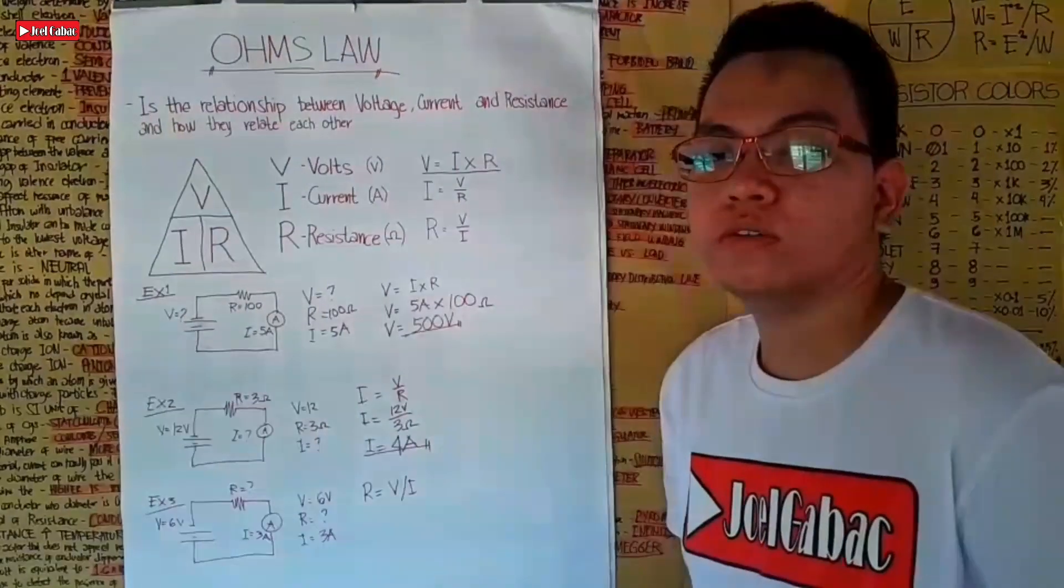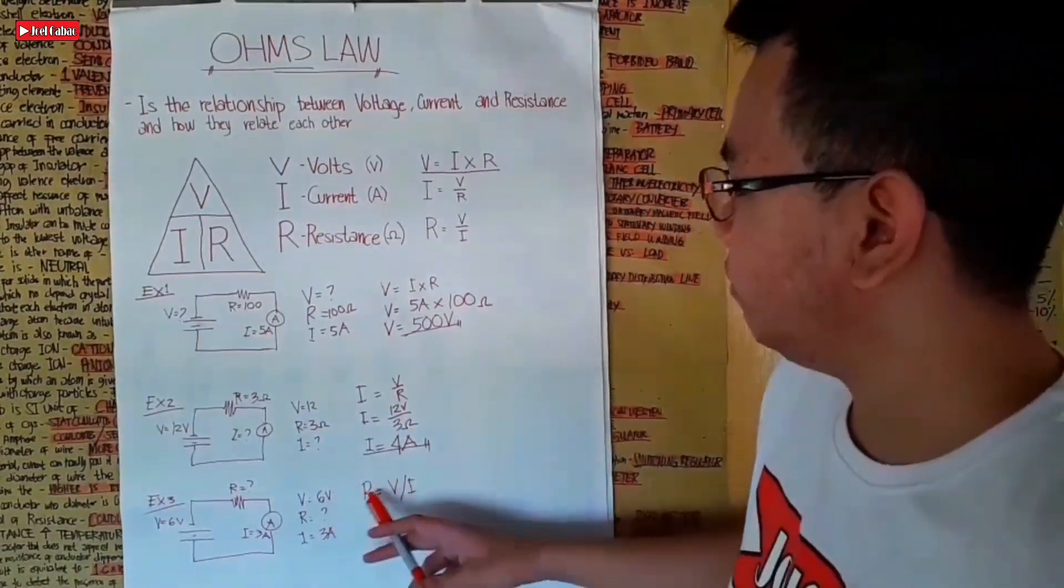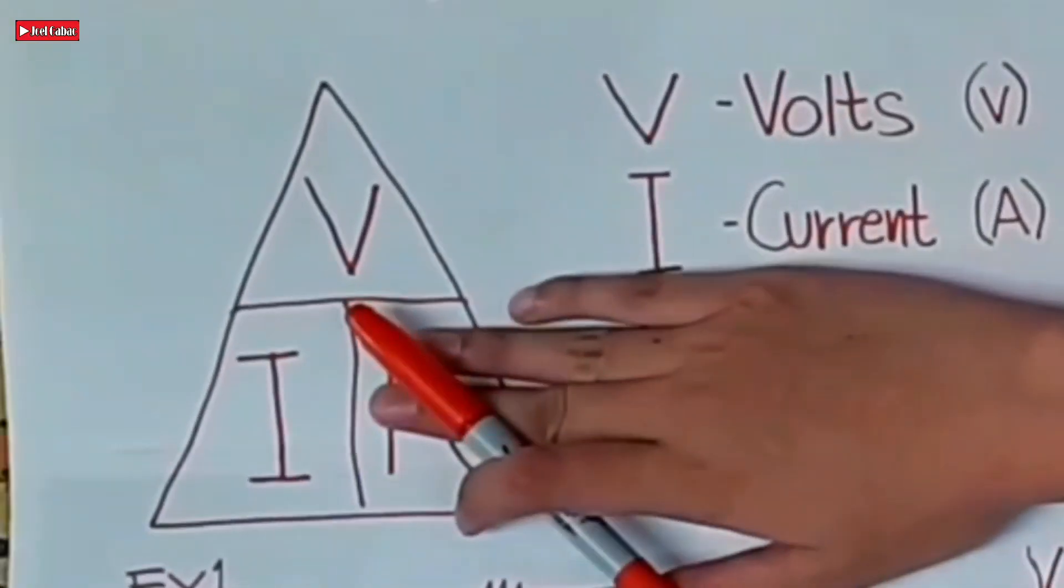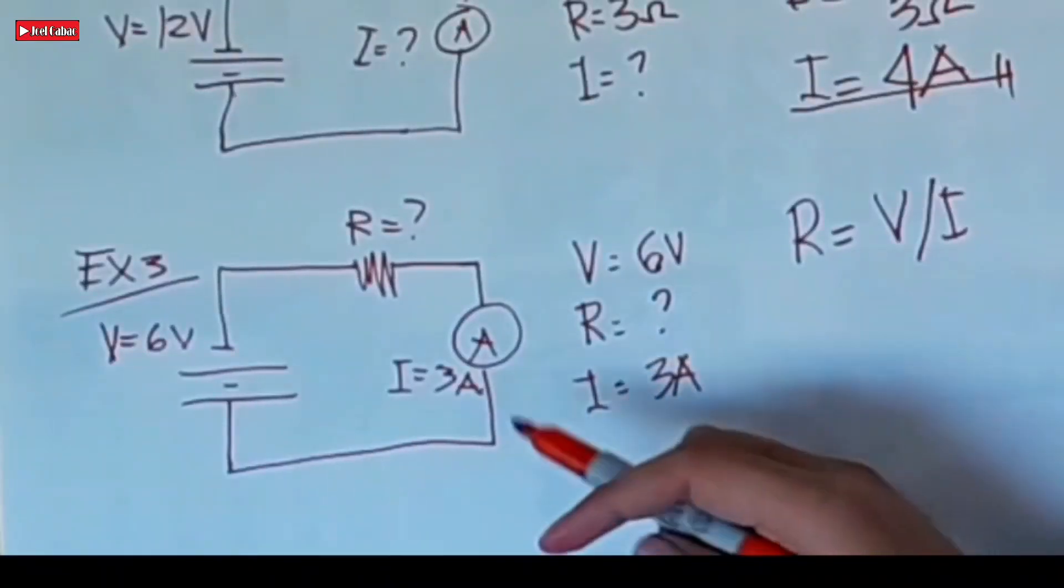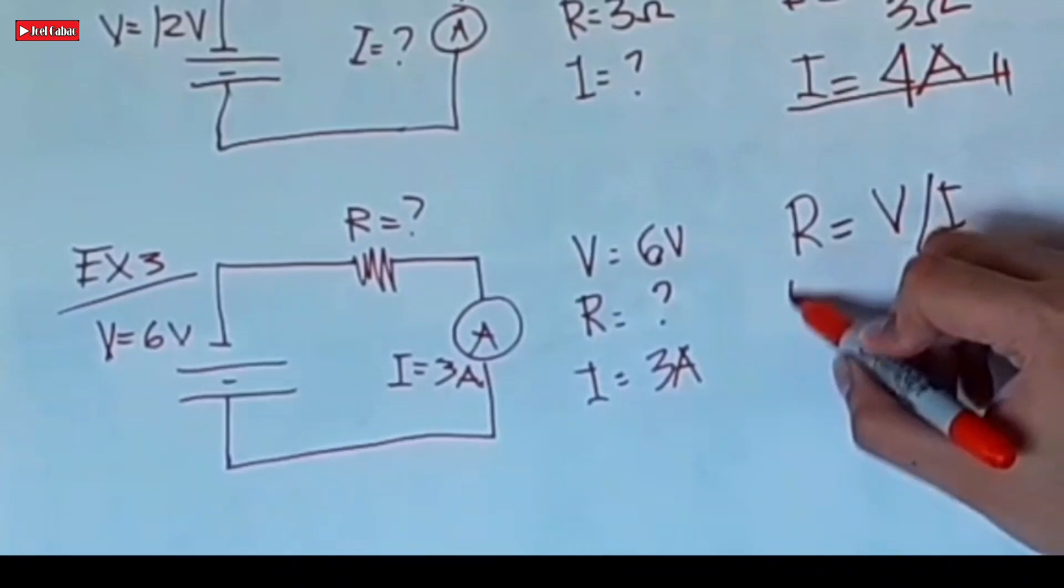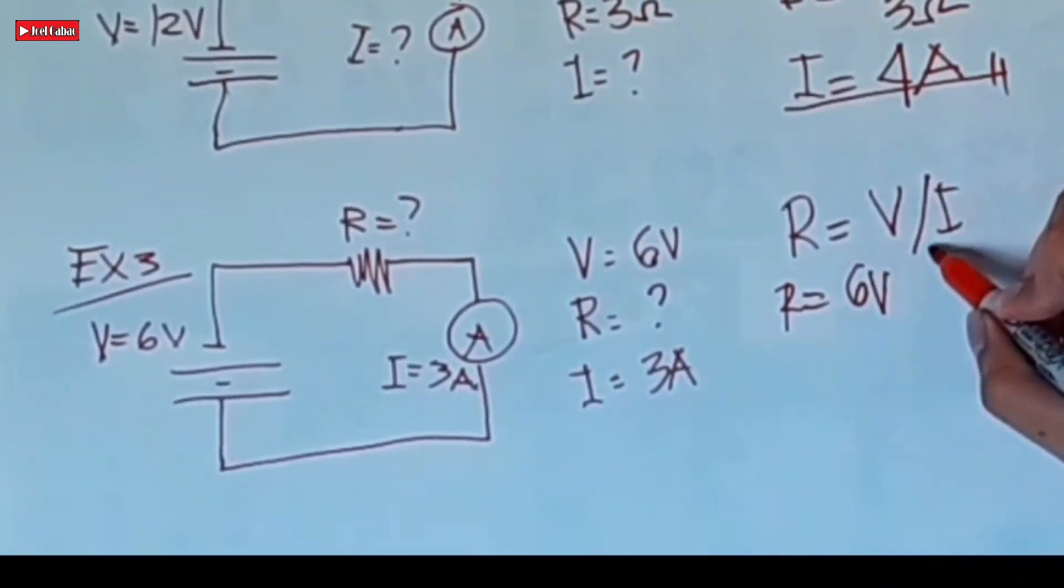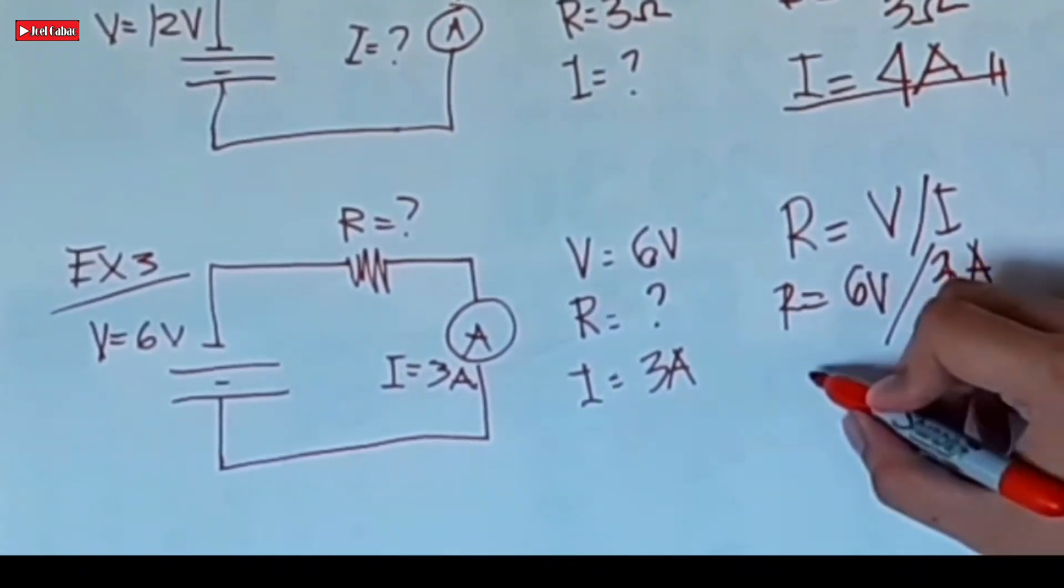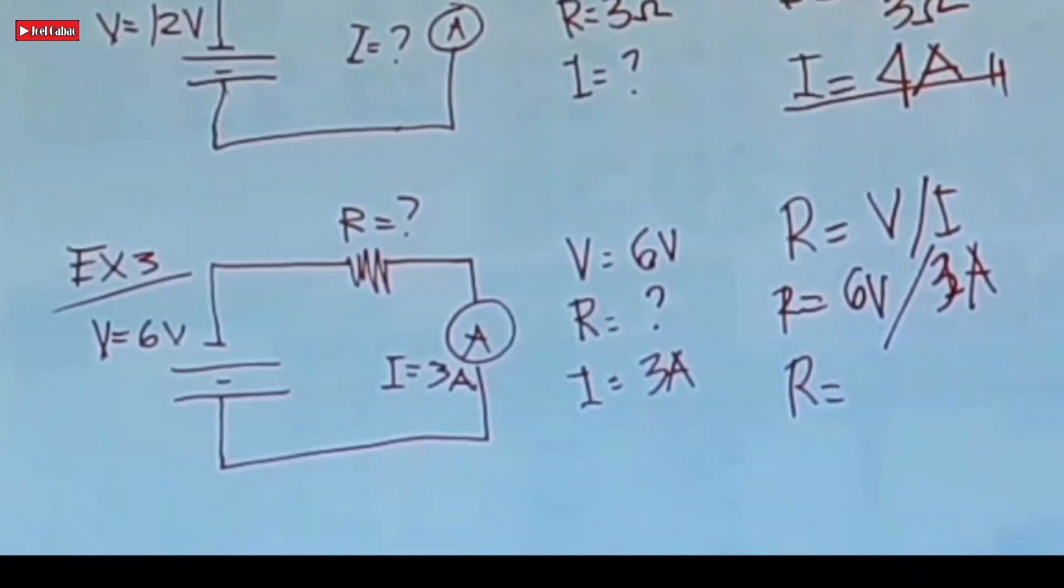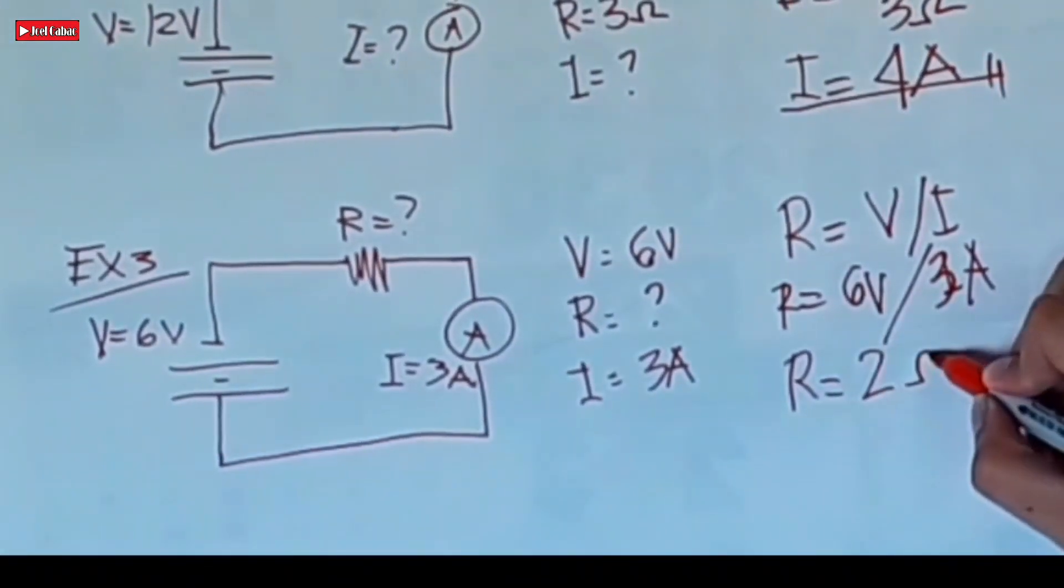Moving on to Example Number 3. This one is about resistance. We use the formula R is equal to V over I. Given: R is unknown, V is 6 volts divided by I which is 3 amperes. So the resistance is 6 divided by 3, which equals 2 ohms.